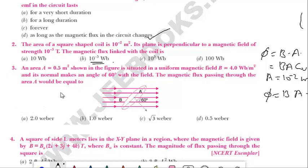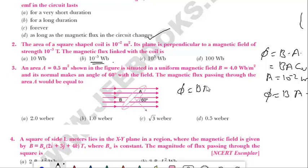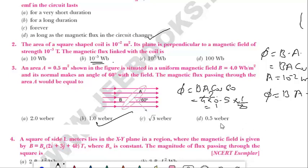Third one: an area of 0.5 m² is situated in a uniform magnetic field B = 4 Wb/m², and its normal makes an angle of 60° with the field. The magnetic flux passing through the area: φ = BA cos 60° = 4 × 0.5 × ½ = 1 Wb. The answer is 1 Wb.